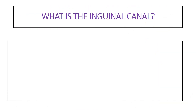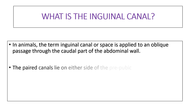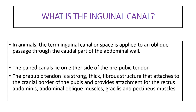In animals, the term inguinal canal — sometimes referred to simply as a space — is applied to an oblique passage through the caudal part of the abdominal wall. The paired canals lie on either side of the prepubic tendon, which is a strong thick fibrous structure that attaches to the cranial border of the pubis and provides attachment for important muscles such as the rectus abdominis, the external and internal abdominal oblique muscles, as well as the gracilis and pectineus muscles.